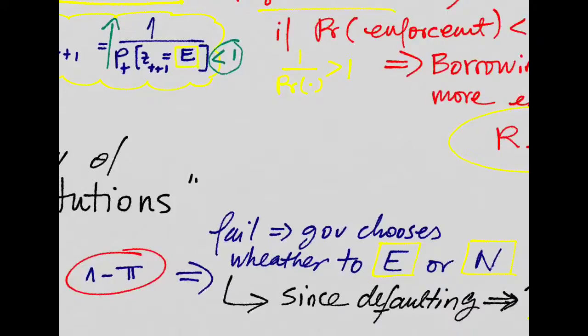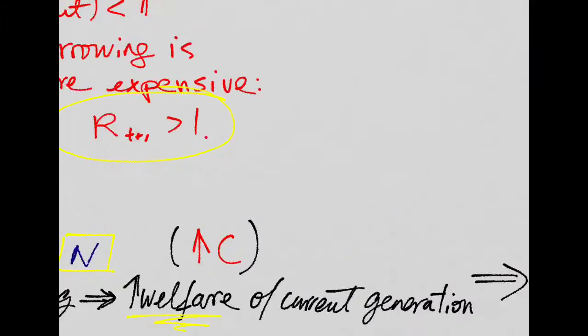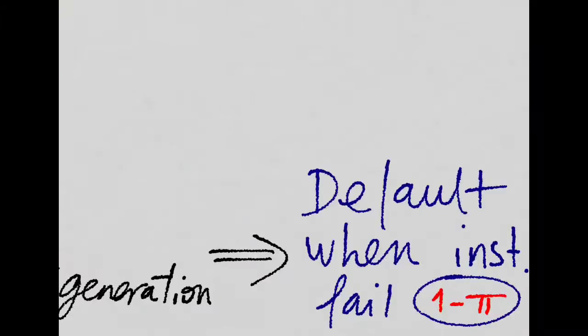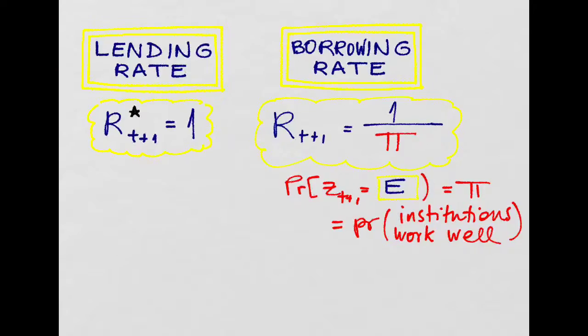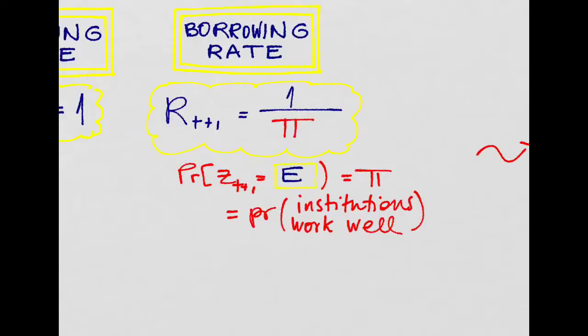So basically, since defaulting, not enforcing, results in higher welfare for the country, whenever an institution fails, there will be a default. This simplifies our analysis, since the probability of enforcement is just the probability that institutions are good.